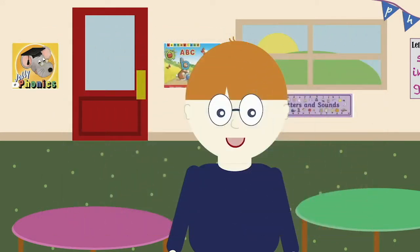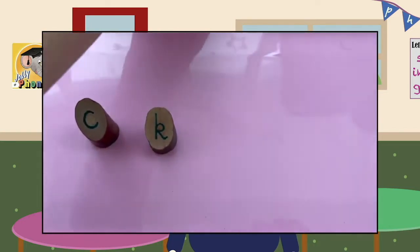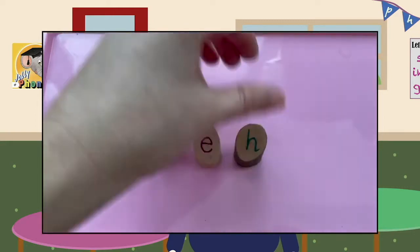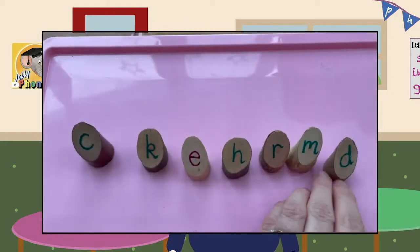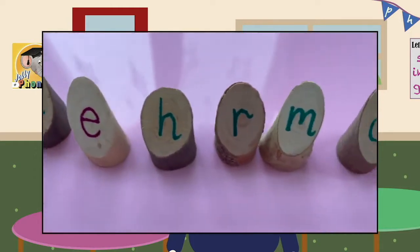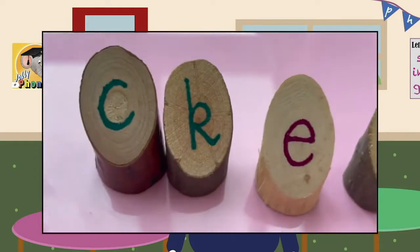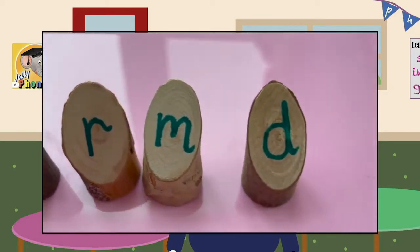Here are the second set of letter sounds for you to learn. K, E, H, R, M, D. Curly K, kicking K, E, H, R, M, D.